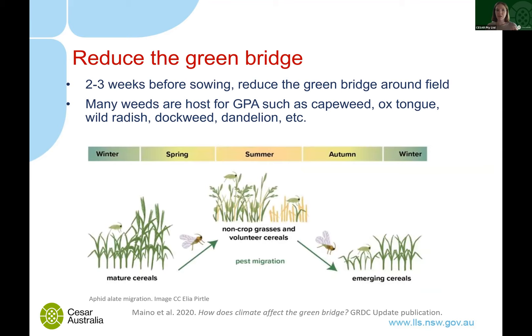Another key thing that will really help with aphid management is keeping an eye on the green bridge. Two to three weeks before sowing, make sure you've reduced the green bridge around the field. There are many different weeds which host aphids such as green peach aphid — capeweed, ox tongue, wild radish, dockweed, and dandelion. Being on top of the green bridge reduces the refuge for aphids and can really affect the numbers entering your crops during cropping season.